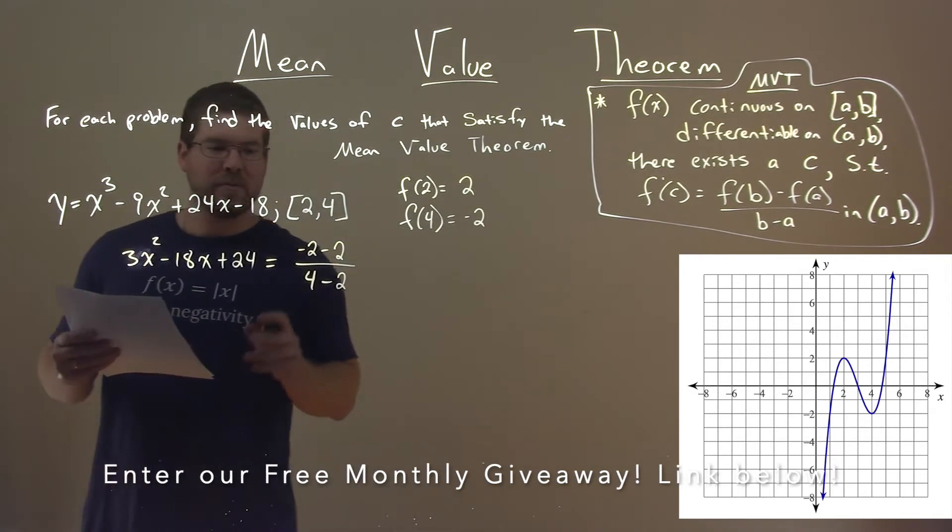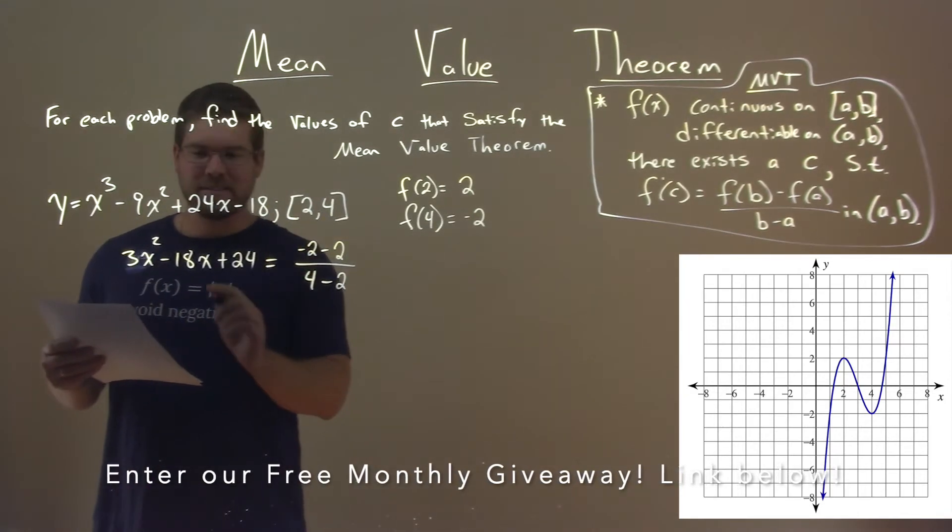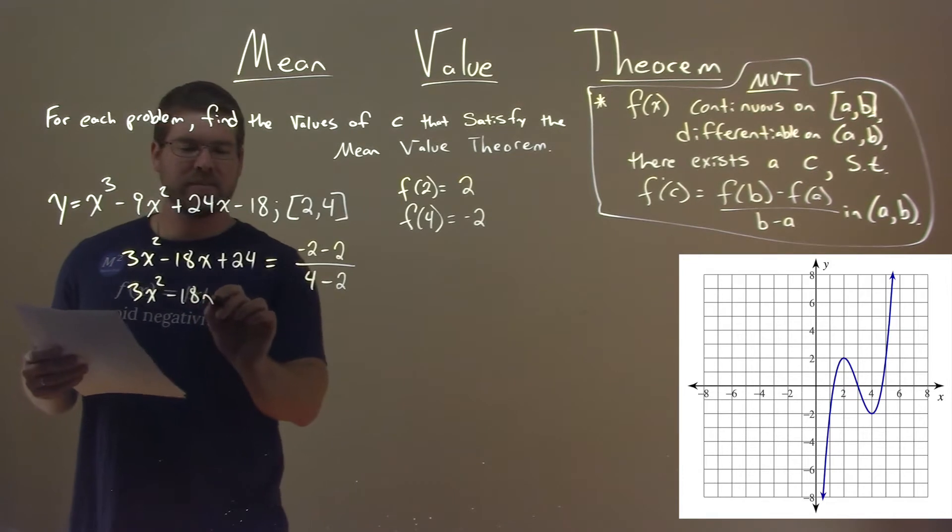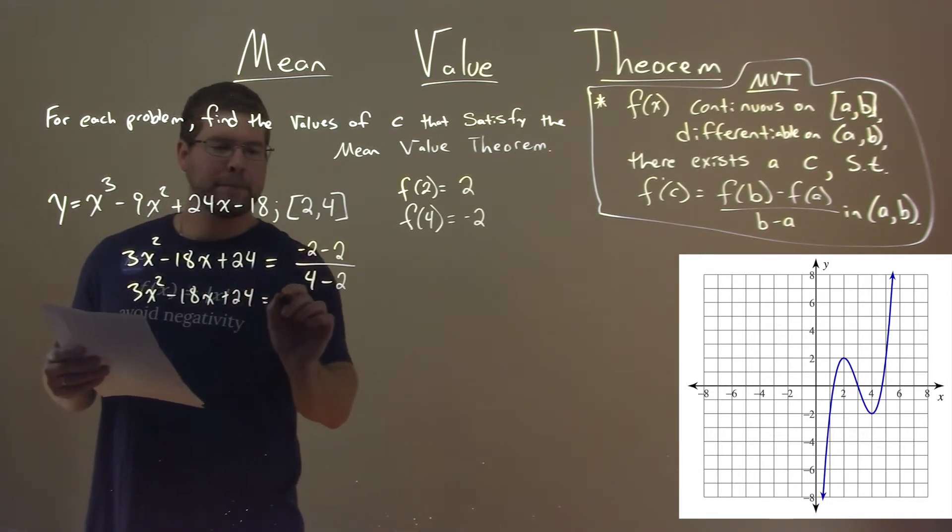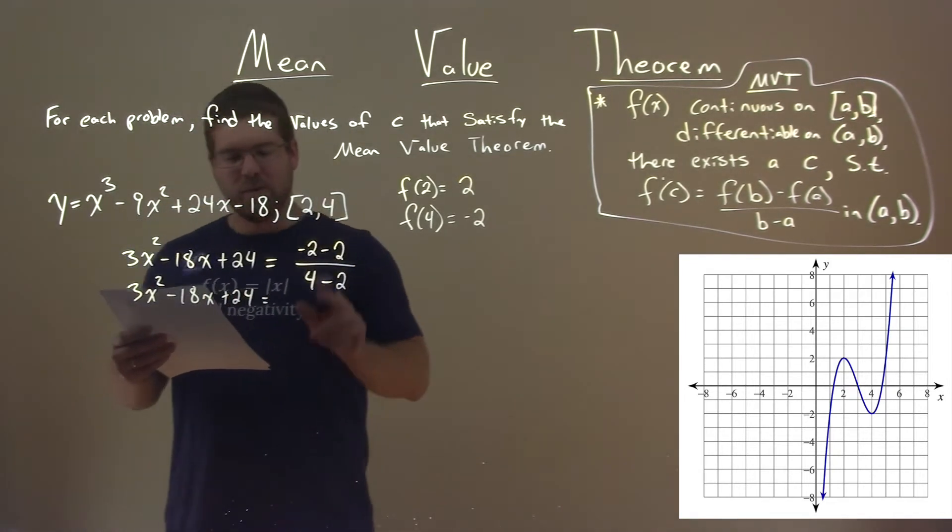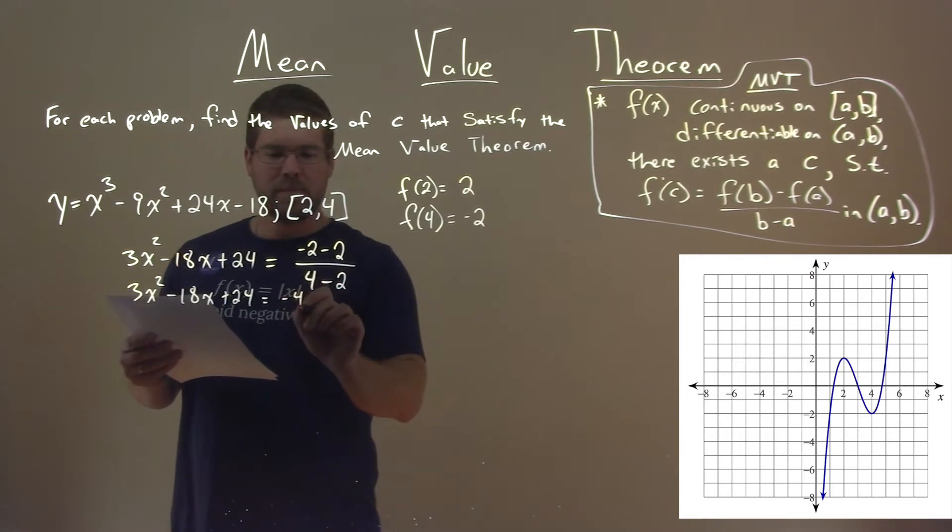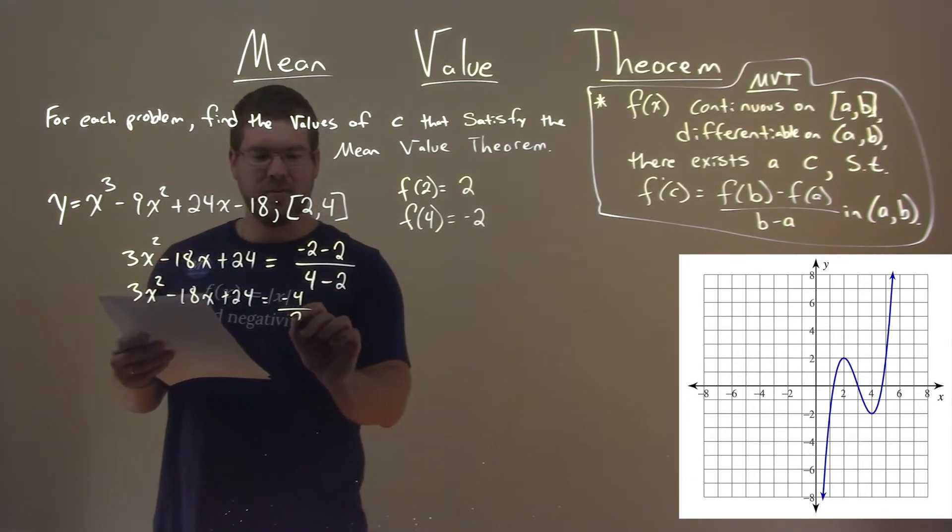From there, we need to now simplify this. So, we have 3x squared minus 18x plus 24, and that's equal to, well, negative 2 minus 2 is a negative 4, over 4 minus 2, which is a 2.